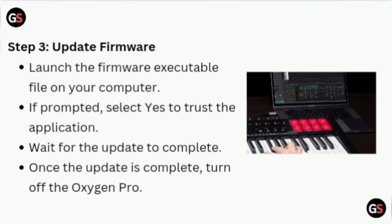Step 3: Update Firmware. Launch the firmware executable file on your computer. If prompted, select S to trust the application. Wait for the update to complete. Once the update is complete, turn off the Oxygen Pro.